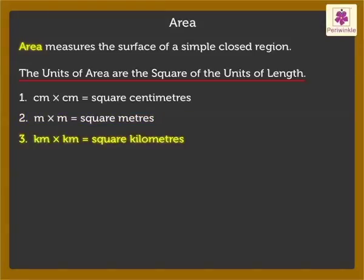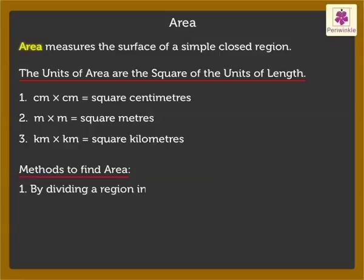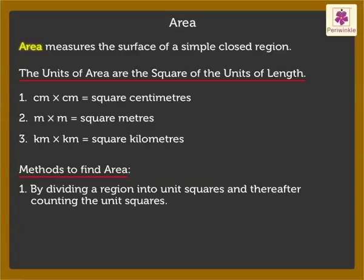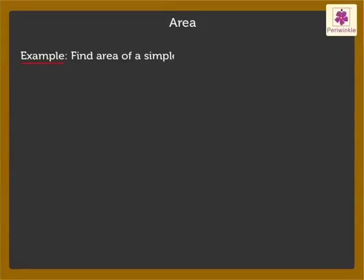There are two methods to find the area. One is by dividing a region into unit squares and thereafter counting the unit squares, and the other is by using a formula. Let's learn about each of these in a bit of detail. First, let's see how to find the area of a simple closed region by counting unit squares when the region is divided into unit squares.